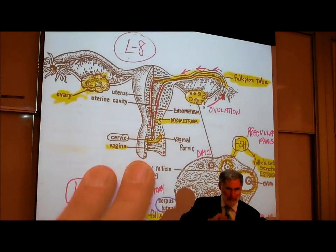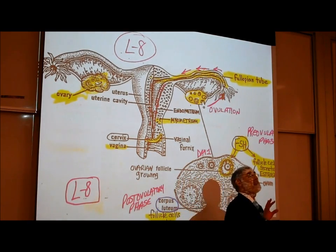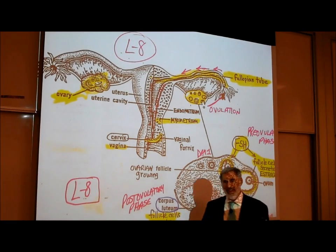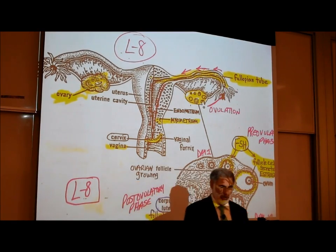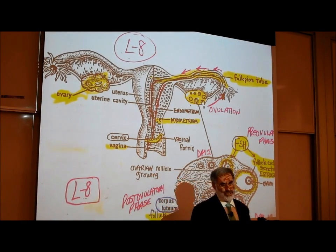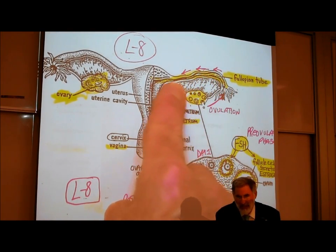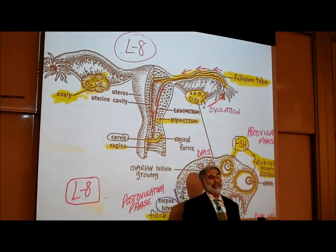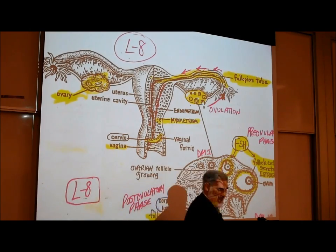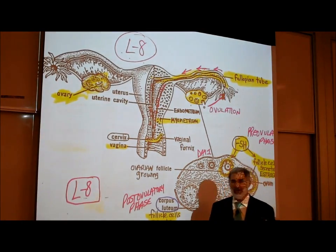When the egg pops out of the ovary, it enters the fallopian tube. An egg cannot move on its own — unlike a sperm which has a tail or flagellum. But the cells on the inside lining of the fallopian tube possess cilia, and those cilia act to push the egg or embryo in the direction of the uterus.